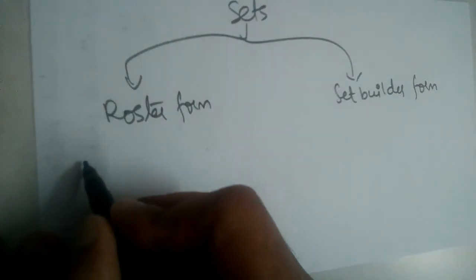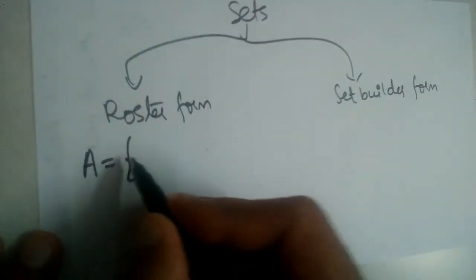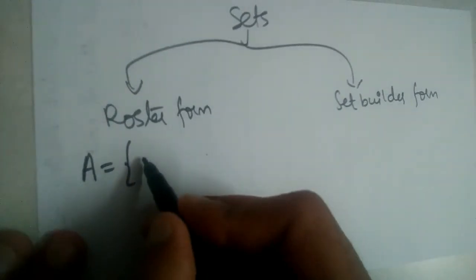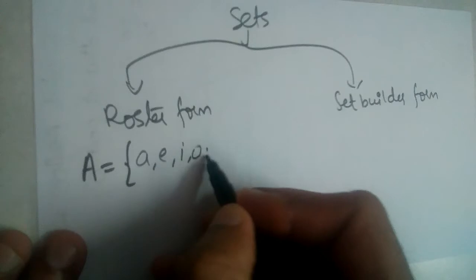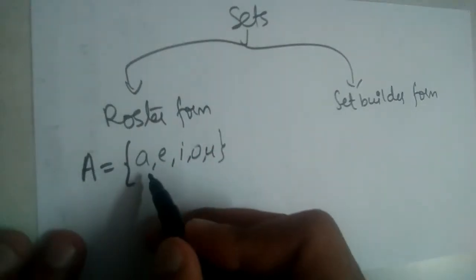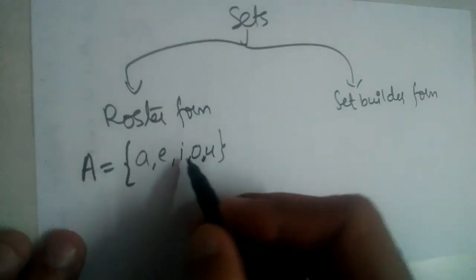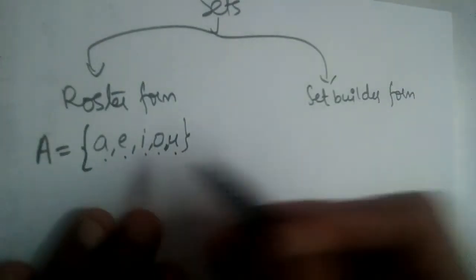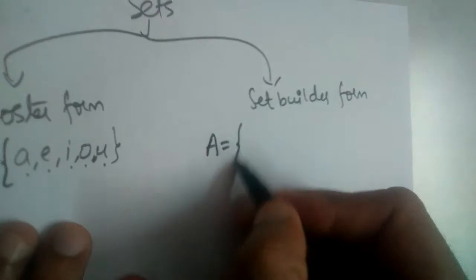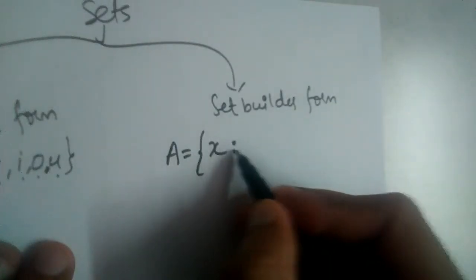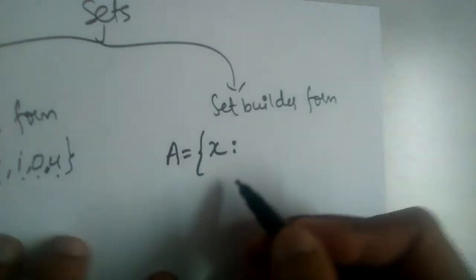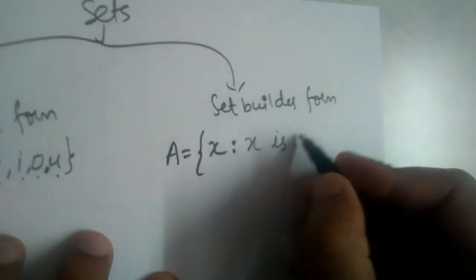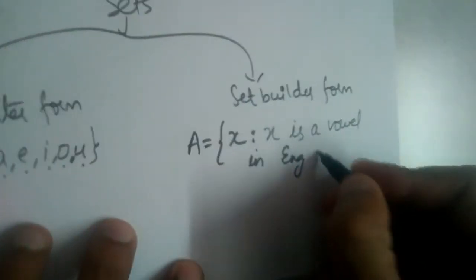In roster form, we write the actual elements of a set. For example, let A be a set of vowels in the English alphabet, so A = {a, e, i, o, u}. We write the actual elements separated by commas. If we want to write the same set in set builder form, we write it as A = {x : x is a vowel in the English alphabet}. These two dots are called 'such that'.